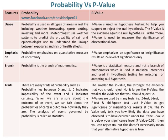Probability emphasizes on the quantitative measure of uncertainty. Whereas, p-value emphasizes on significance or insignificance results at the 5% level of significance only. Probability is the branch of mathematics, whereas p-value is a statistical measure and not a branch of mathematics, which is used in statistical inferences and hypothesis testing.